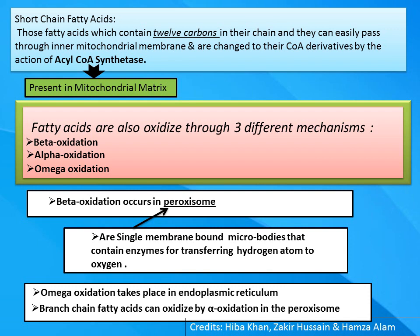Fatty acids are oxidized by three different mechanisms: one is beta-oxidation, another is alpha-oxidation, and the third is omega-oxidation. Beta-oxidation also occurs in the peroxisome. Omega-oxidation takes place in the endoplasmic reticulum, while branched-chain fatty acids are oxidized by alpha-oxidation in the peroxisomes. Tomorrow we will discuss the complete fatty acid oxidation by these three different mechanisms — alpha, beta, and omega. Thank you so much.